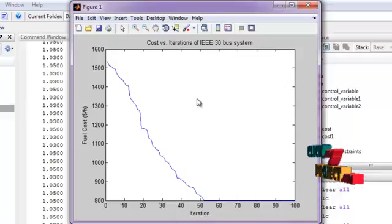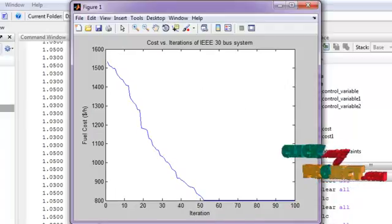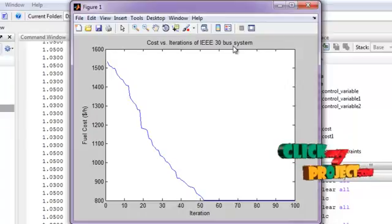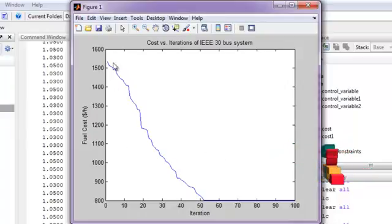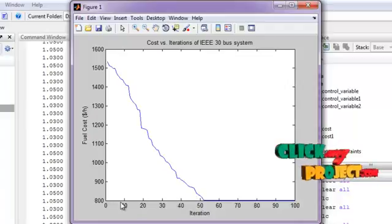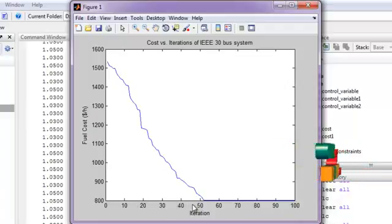Here, we obtained the cost curve showing fuel cost versus various iterations. Here, there are 100 iterations taken for this implementation on IEEE 30 bus system. The fuel cost will be decreased as the iteration increases. Thank you.